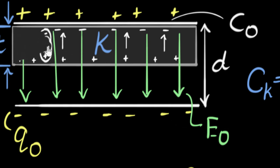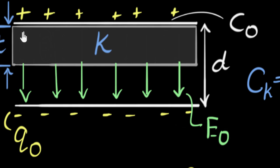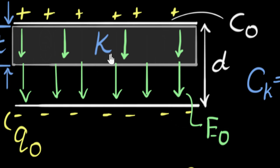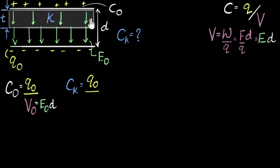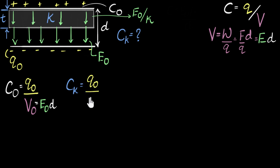The net result is that the electric field inside the dielectric ends up lower than it was before, because the induced field tries to cancel the original one. The electric field lines inside become more spread out. How much it gets lowered is exactly what K tells us — the electric field inside becomes E₀ divided by K. The stronger the dielectric, the more it cancels the field, and the lower the electric field inside.